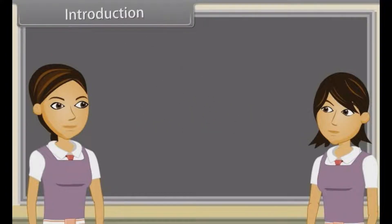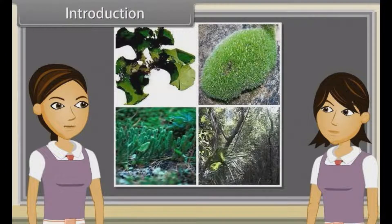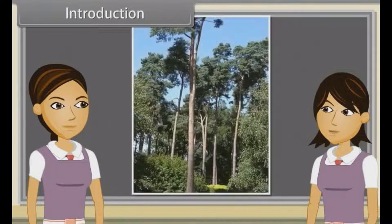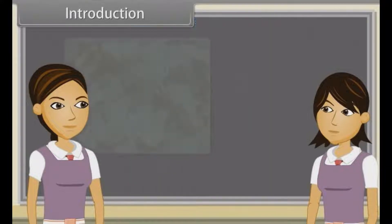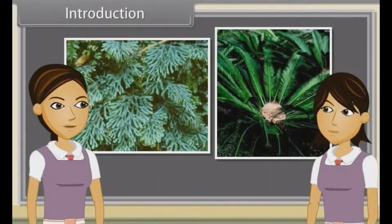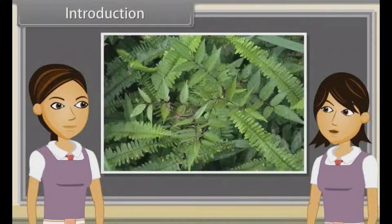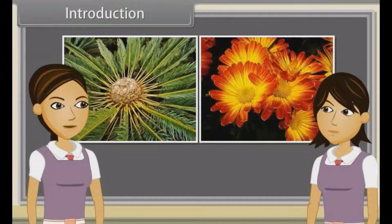Introduction. As we have already discussed earlier, land plants are divided into Thallophyta, Bryophyta, and Tracheophyta. Tracheophyta includes vascular plants. These vascular plants are Pteridophytes, Gymnosperms, and Angiosperms. We have already discussed Pteridophytes. Now we are going to study Gymnosperms and Angiosperms.